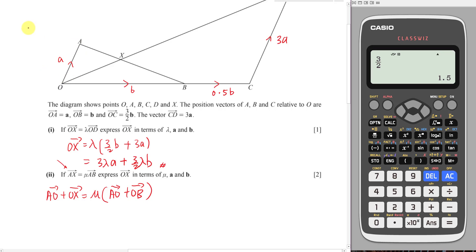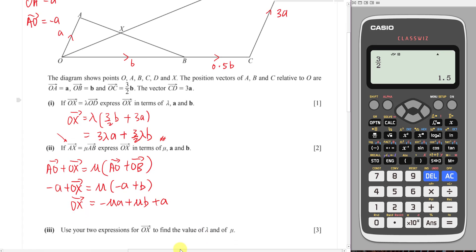We know OA is A. If O to A is A, then A to O will be negative A because opposite direction. OX is what I want as a subject, so I will leave it there. So here will be negative A plus B. So I want to make OX as a subject and this one I'll multiply in: will be negative mu A plus mu B plus A here. This is the final answer, but like I say, I prefer to group them in A and B. So I have 1A minus mu A, so this one is 1 minus mu A if I factorize out A, plus mu B.